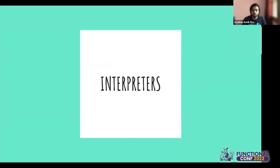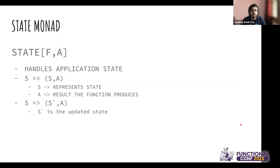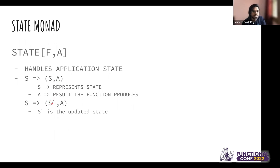We have made heavy use of the State monad when writing interpreters. In functional programming, the State monad handles application state: you start with a state S and compute (S', A), where S' is the updated state and A is the result. In a for-comprehension, the previous calculated state is passed to the next computation. This is the most popular choice when interpreting the free program because you're trying to pass the output of previous atomic units to the next computation.